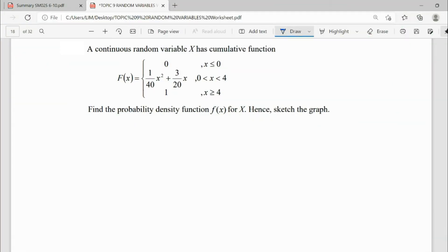For this continuous random variable having cumulative function, find the probability density function. We're going to differentiate every interval. For F(x) to change to f(x), we're going to differentiate every interval so that we can go back to its original function.